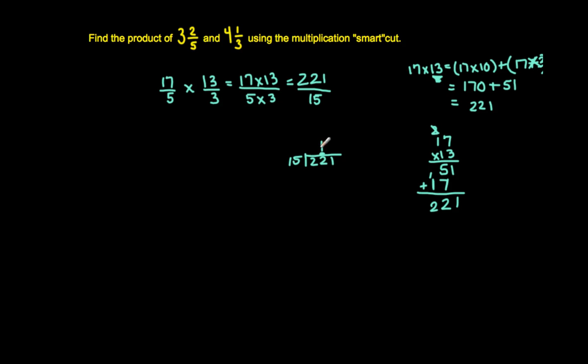So 15 times 10 gives me 150, or 15 goes into 22 one time. And 22 minus 15 is 7, and pull down this 1 here. 15 goes into 71.